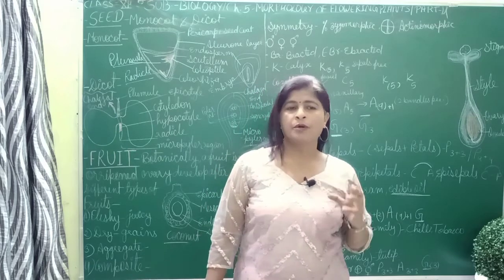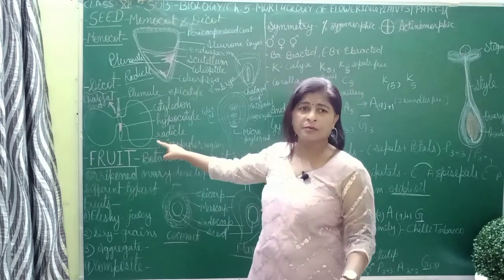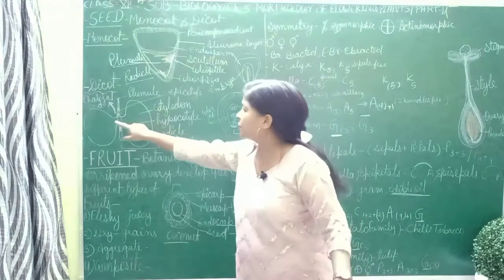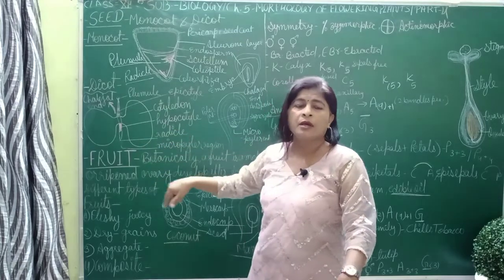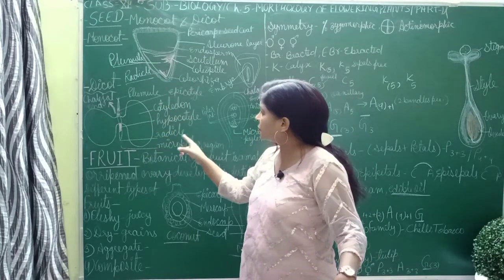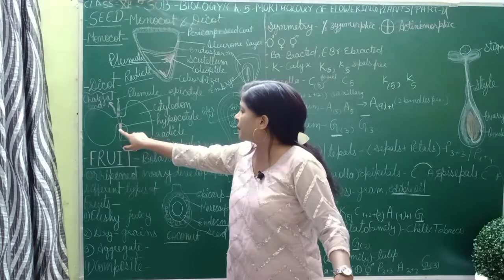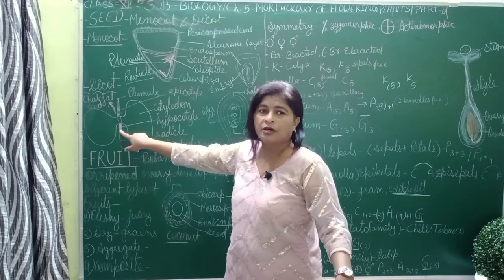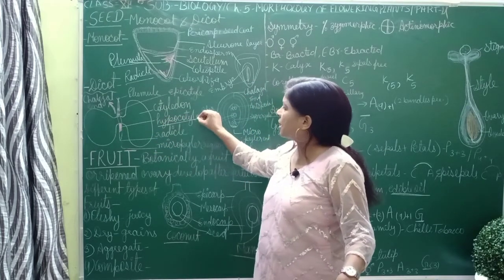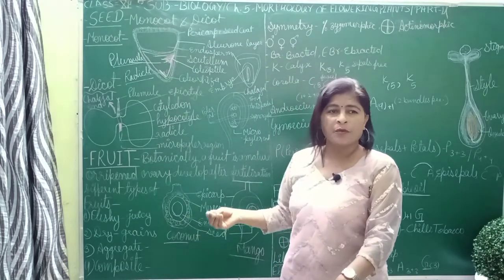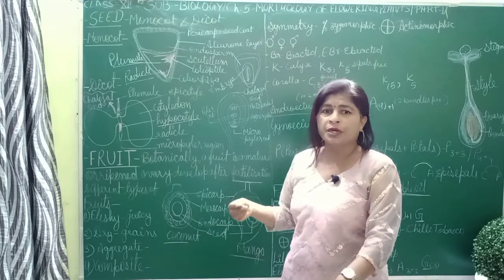Now we will discuss the dicot seed. According to the diagram of the dicot seed, the function of the cotyledon is storage of food. We have seen that the radicle is present always on the lower side, because this is the future root. The radicle has a tube-like structure and it is called the root cap.